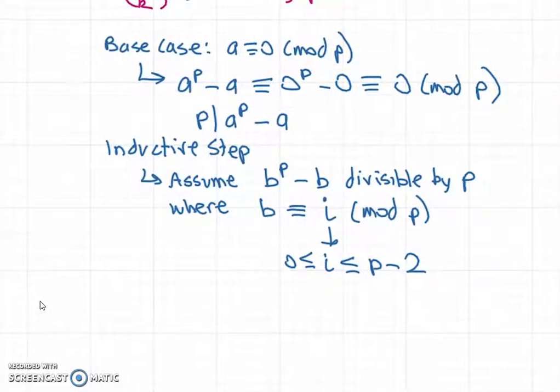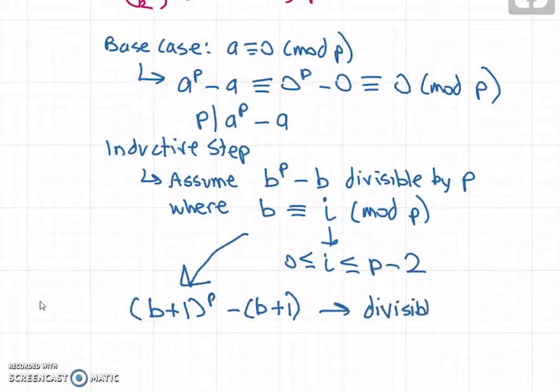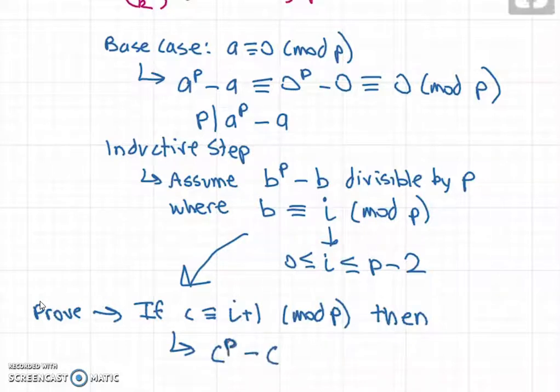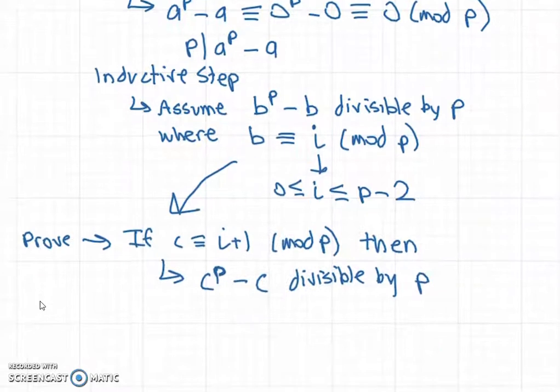Now we'll prove that (b+1)^p minus (b+1) is divisible by p. I'll rewrite it slightly differently: I'm going to prove that if c is congruent to i+1 mod p, then c^p minus c is divisible by p. So now we're proving it for i+1.